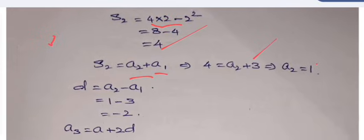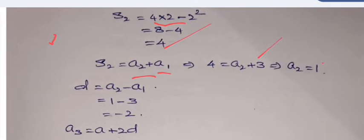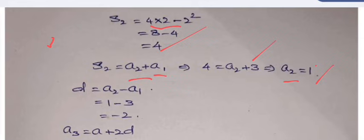So that's why here S₂ is a₂ plus a₁, in which a₁ we know that it is 3, so a₂ should be 1 to get the total 4. Now d we have to calculate. We know the second term which is 1 and first term a₁ that is 3.